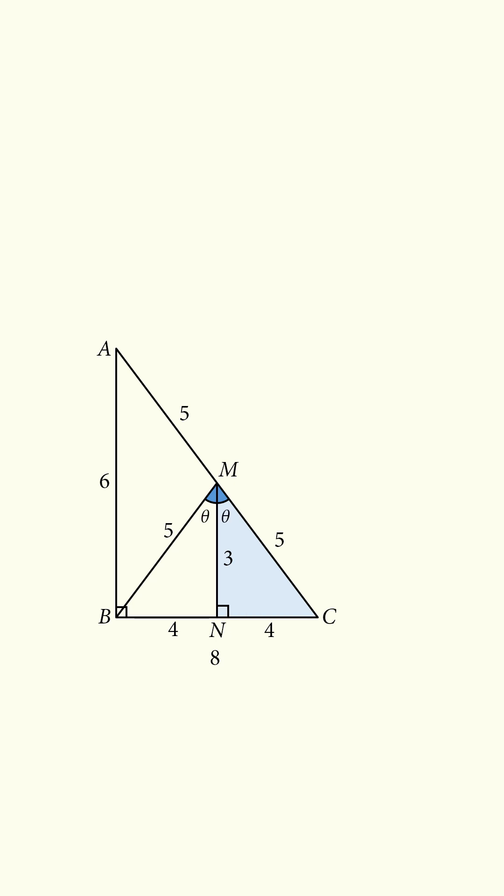We now have these angles equal to theta. So the sine of BMC is equal to the sine of 2 theta. Use the double angle formula. Substitute in for the sine and cosine, and we get the answer of 24 over 25.